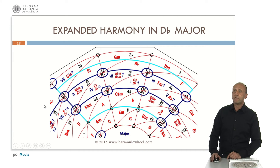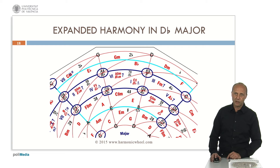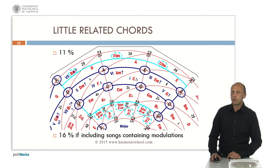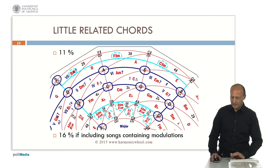And in the same way for any other major key, for example, D flat major. With the harmonic wheel, we don't need to do any complex mental exercises for obtaining the chords. The rest of the chords are called little related chords. Only 11% of the songs include one of these chords or an augmented or diminished chord. This percentage increases up to 16% if we include the songs containing modulations.